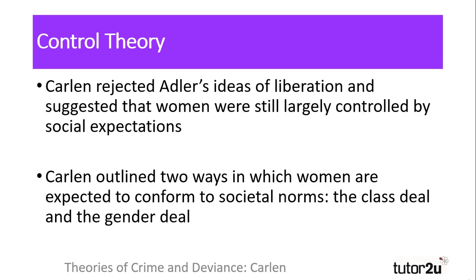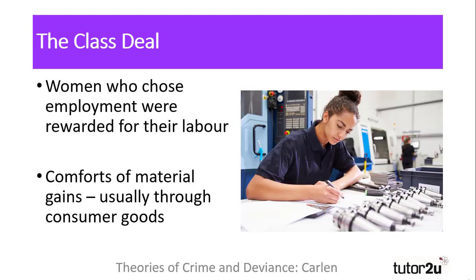Carlin outlined two ways in which women were expected to conform to social expectations: the class deal and the gender deal. As female involvement in paid work increased, those women who chose employment were rewarded with the class deal. According to Carlin, women sold their labour in return for material rewards — that is, wages — and used these to obtain comfort through the purchase of material goods. In this way, women were controlled by being expected to be obedient to their employers, passive and submissive, in order to progress.